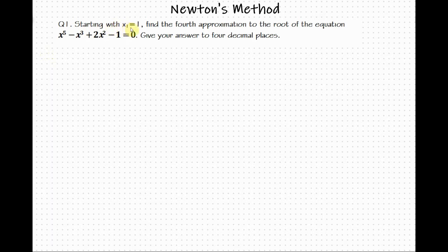Starting with x sub 1 equal to 1, find the fourth approximation to the root of the equation x raised to the power of 5 minus x cubed plus 2x squared minus 1 equal to 0. Give your answer to four decimal places.